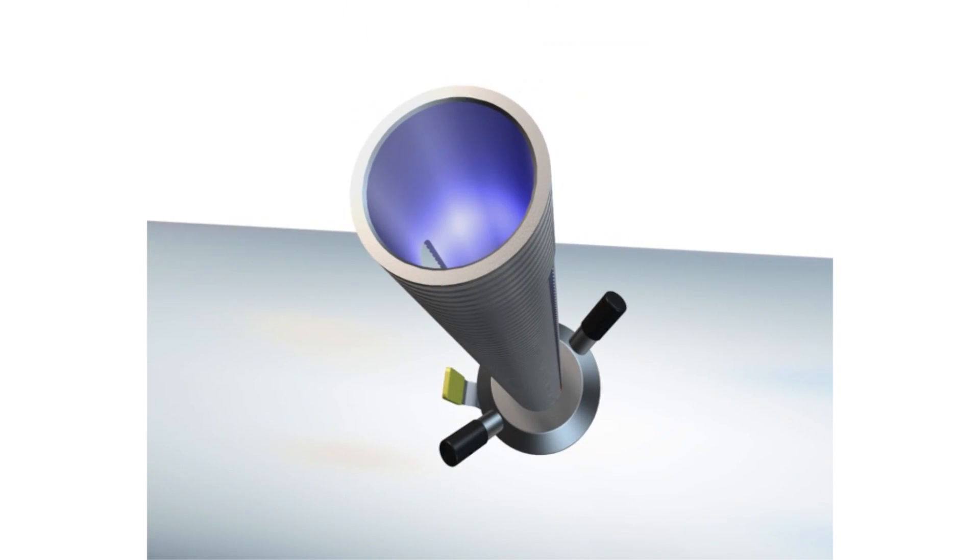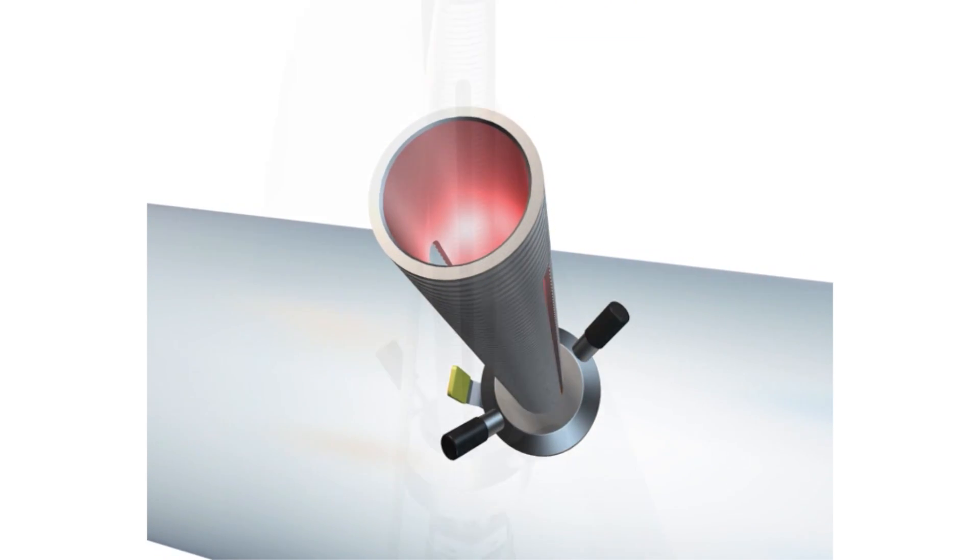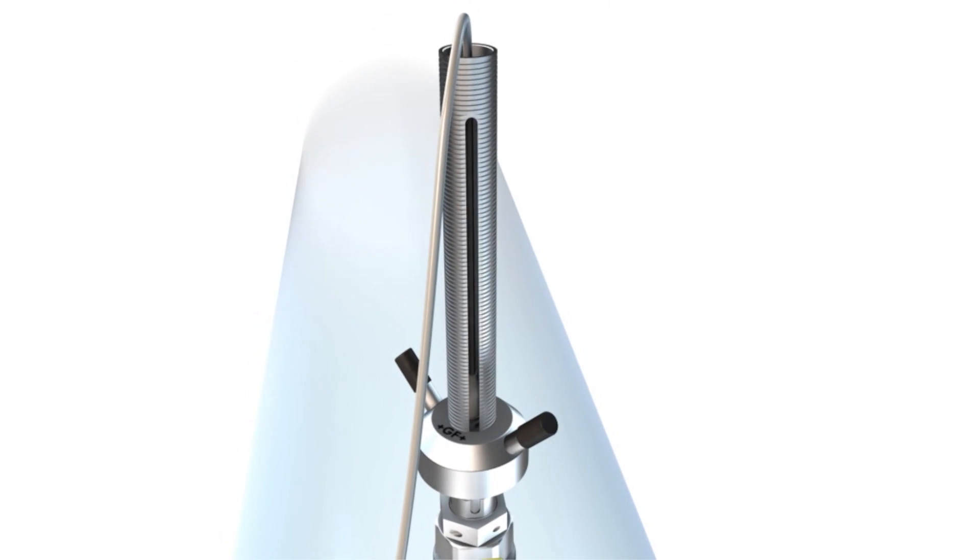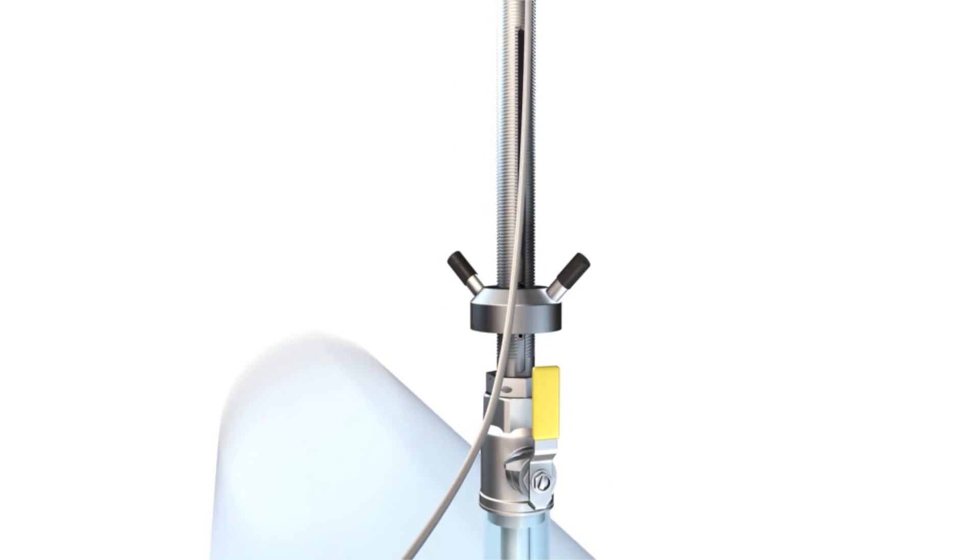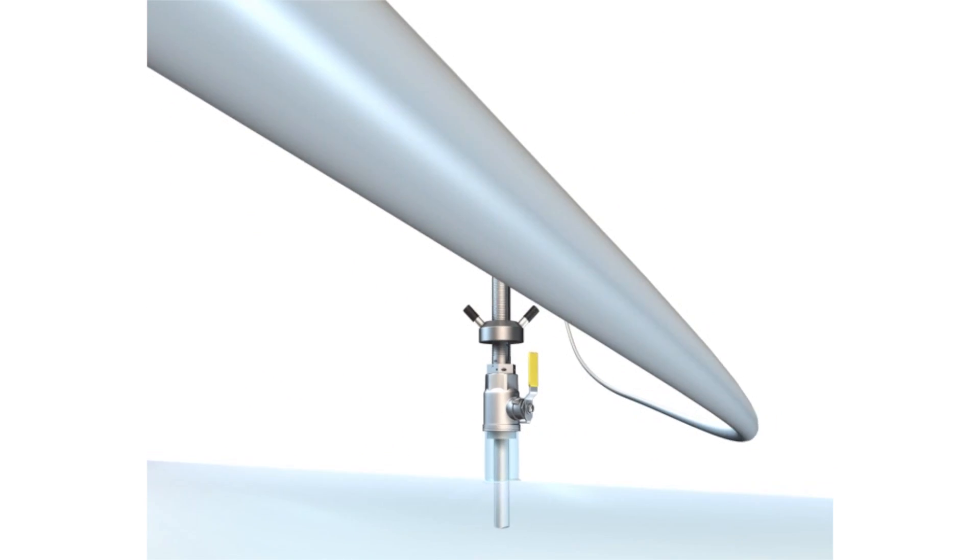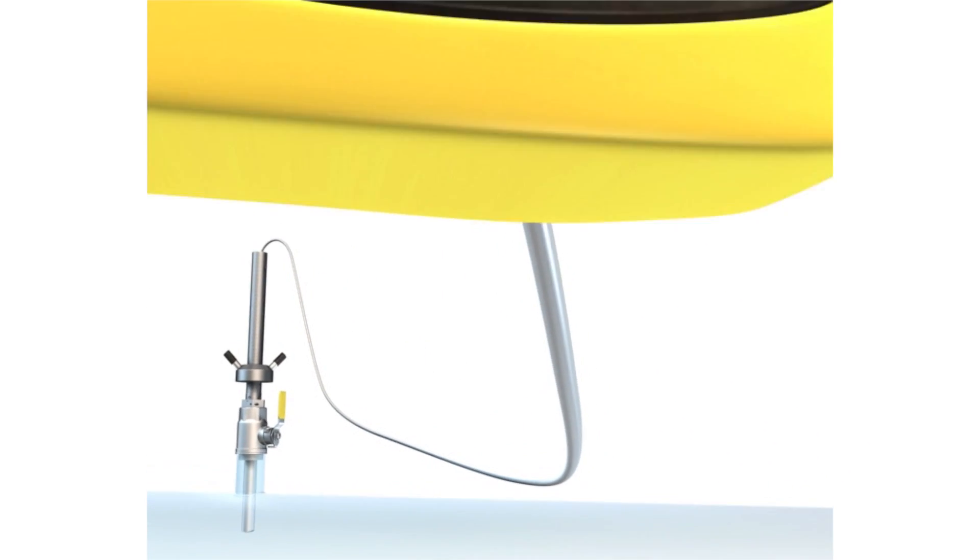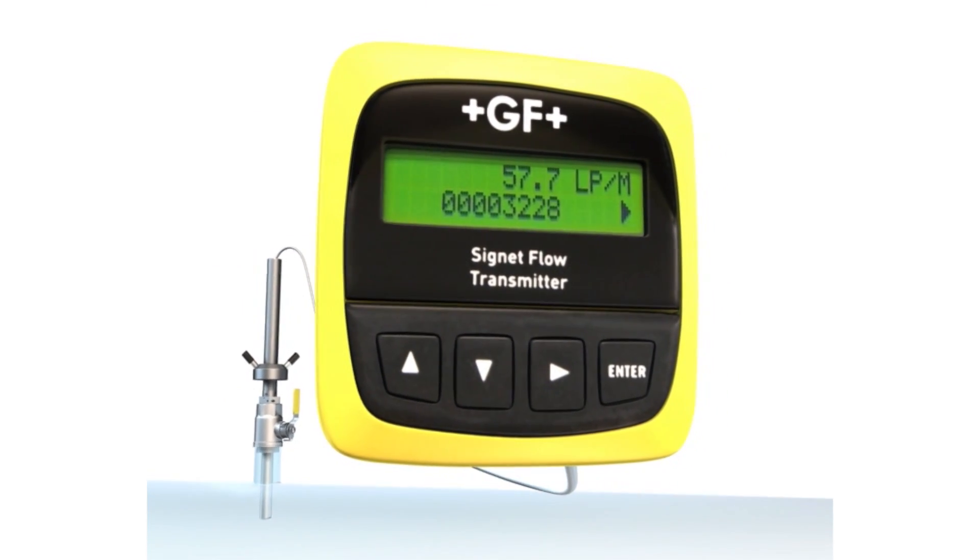The O-ring seals prevent process leakage. The blue and red lights indicate various flow conditions. The optional watertight cable enables prolonged submersion in temporary flooded conditions. The sensor output can be connected to a PLC, chart recorder, or one of Signet's world-renowned instruments such as the model 8550.